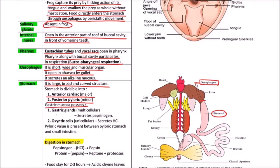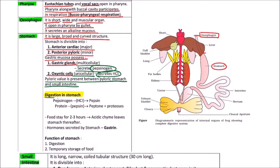Gastric mucosa, the lining of stomach, has two types of glands: gastric glands and oxyntic cells. Gastric glands are multicellular and secrete pepsinogen, while oxyntic cells which are unicellular secrete HCl. Pyloric valve is present between pyloric stomach and small intestine. Pepsinogen, the inactive form of pepsin, is activated to pepsin in presence of HCl secreted by oxyntic cells. Pepsin converts proteins into peptones and proteoses. Food may stay for two to three hours in the stomach, thereafter acidic chyme leaves. The hormone secreted by stomach is gastrin which promotes release of gastric juice.